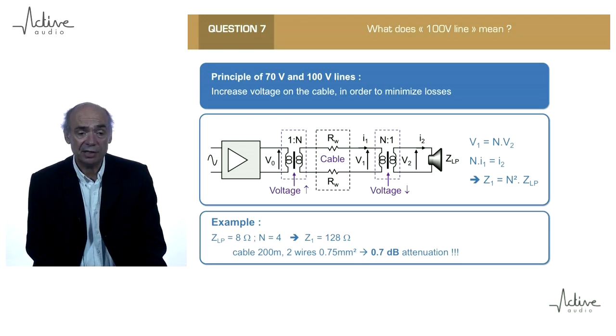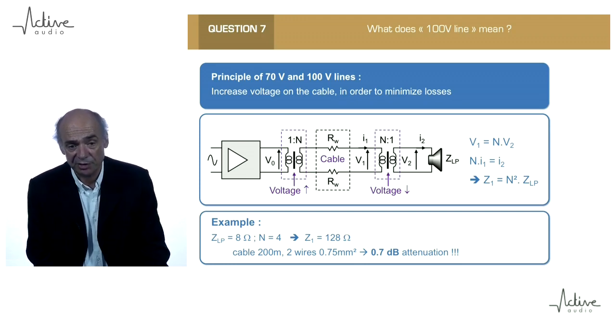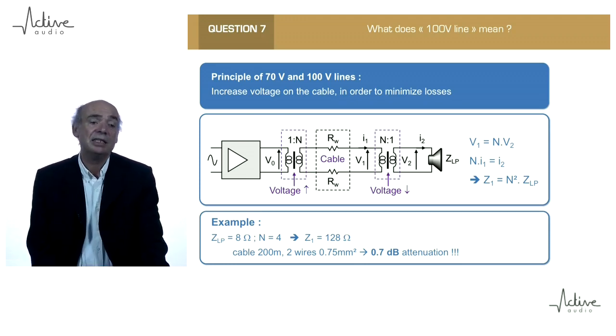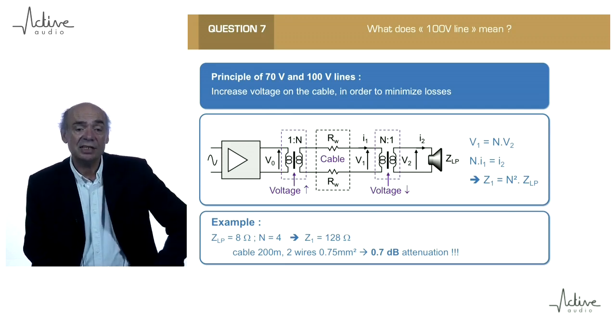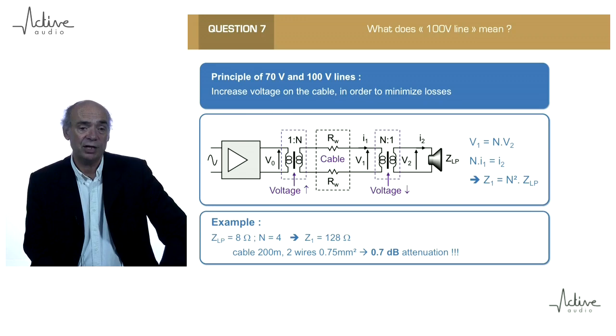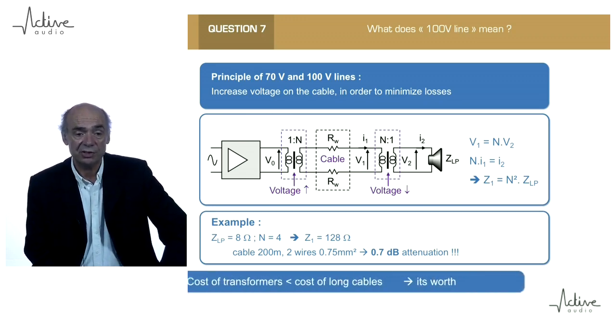For example, with the same cable as before, same loudspeaker as before, 8-ohm, and same length of cable, this time we have only 0.7 dB attenuation, which is an enormous gain.